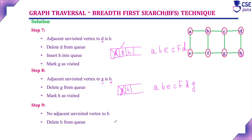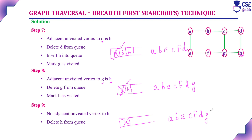Adjacent unvisited vertex to G is H only, but H is already in the queue. The queue now contains G and H. Delete G from the queue and place it in the traversal output — now A, B, E, C, F, D, G. Step 8: mark H as visited. Currently visited vertex is H — there are no adjacent unvisited vertices. Delete H from the queue and place it in the traversal output. All vertices have been visited in breadth first traversal order.